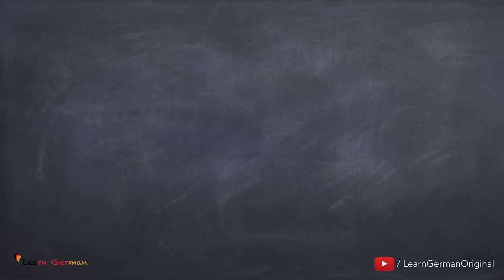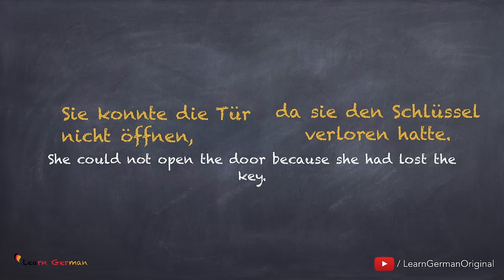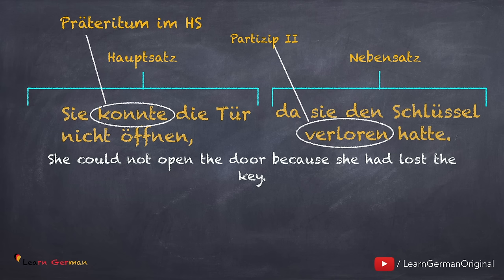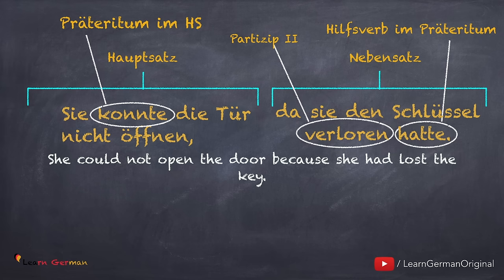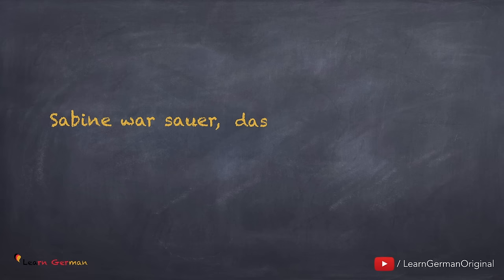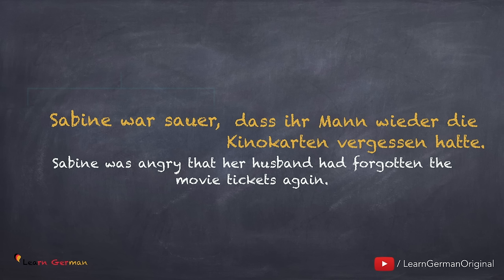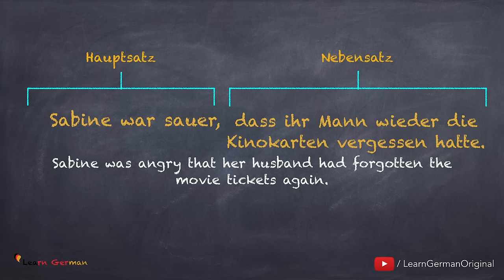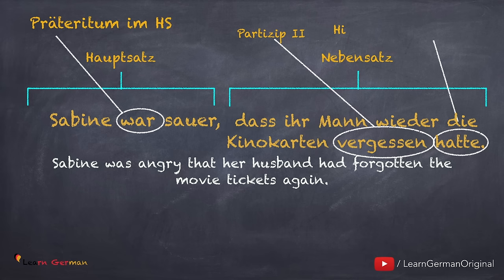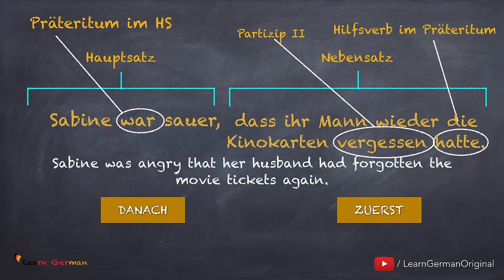Hier ist noch ein Beispiel: Sie konnte die Tür nicht öffnen, da sie den Schlüssel verloren hatte. In diesem Beispiel hat sie zuerst den Schlüssel verloren und dann konnte sie die Tür nicht öffnen. Das Ereignis im Nebensatz findet vor dem Hauptsatz statt, deshalb ist das Verb hier im Plusquamperfekt und im Hauptsatz im Präteritum. Sabine war sauer, dass ihr Mann wieder die Kinokarten vergessen hatte. Here you can also see a Hauptsatz and a Nebensatz. Sabine is furious because her husband forgot the tickets, so the event in the Nebensatz takes place before the event in the Hauptsatz. Hence in the Nebensatz the verb is in Plusquamperfekt and im Hauptsatz im Präteritum.